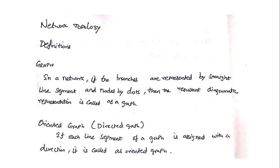Oriented graph: if each line segment of a graph is assigned with a direction, it is called an oriented graph. If I mention a direction on each and every line segment — which is drawn for each and every branch — it is called an oriented graph. The other name of oriented graph is directed graph.